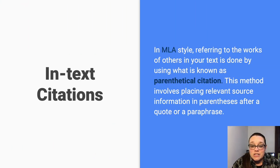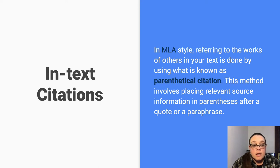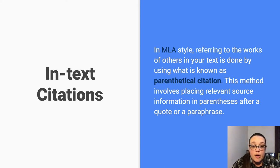In-text citations are really important in all formats — this is how you attribute credit to other sources and other authors, and they usually come directly after the quote that they reference. In MLA style, referring to the works of others in your text is done by using what is known as parenthetical citation or in-text citation. This method involves placing relevant source information in parentheses after a quote or a paraphrase.